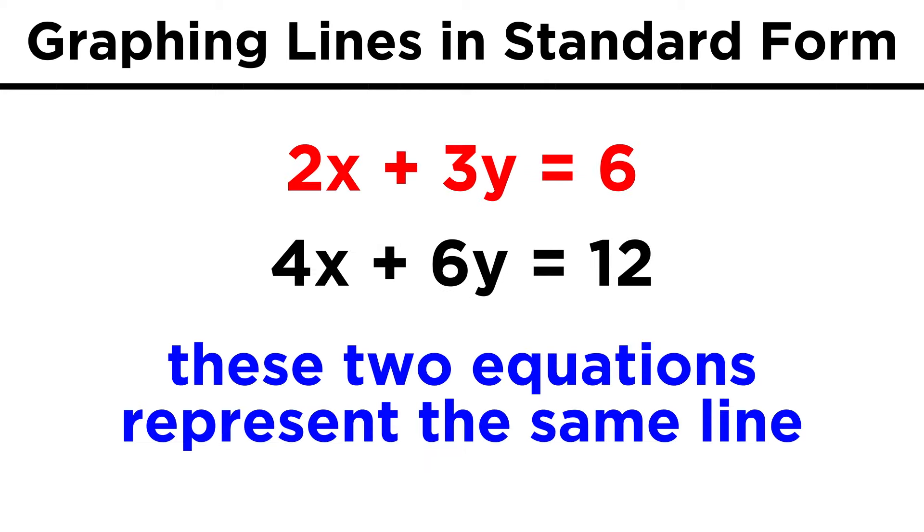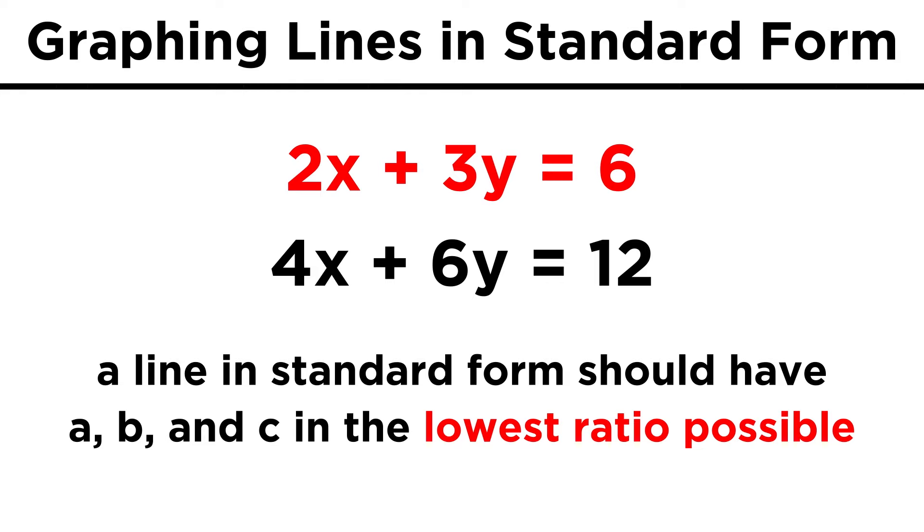Now we can see that this form is actually a little simpler than our original equation. In fact, each term seems to be half of the original term. What this tells us is that when writing an equation in standard form, not only do a, b, and c have to be integers, but they should be in the lowest ratio of these integers that is possible.